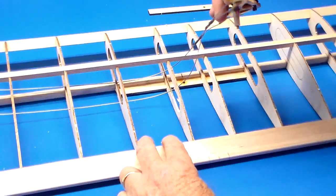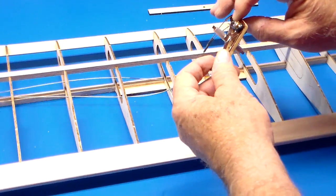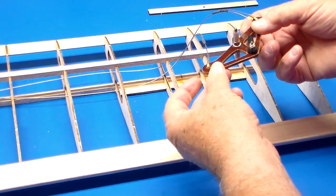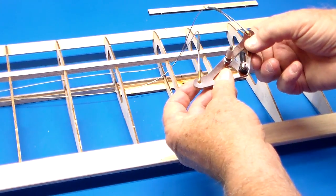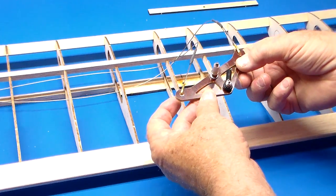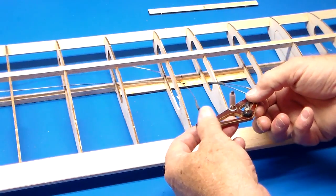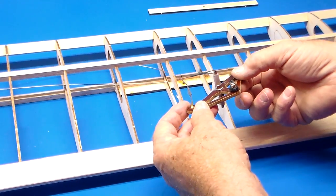Now this bell crank here is actually made by Tom Morris, but you can make these yourself if you want. This material that Tom uses is a phenolic material. I don't know exactly what the chemical composition is, but it's hard, self-lubricating, doesn't weigh much, and works real well for a bell crank.